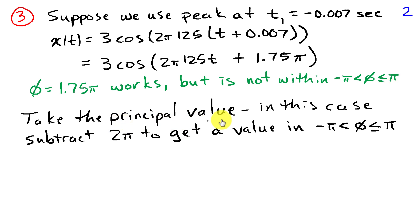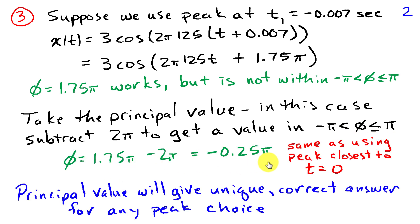So we're going to take the principal value of this phase. In order to do that, we need to take 1.75 pi and get it to lie within this range minus pi to pi. That is accomplished by subtracting 2 pi from 1.75 pi. Obviously, adding 2 pi is going to put it further outside this range. So if we subtract 2 pi, it ends up in this range, and then we get a value which is negative 0.25 pi, which is the same as we had when we chose the peak closest to t equals 0, the peak at t equals 0.001 seconds.